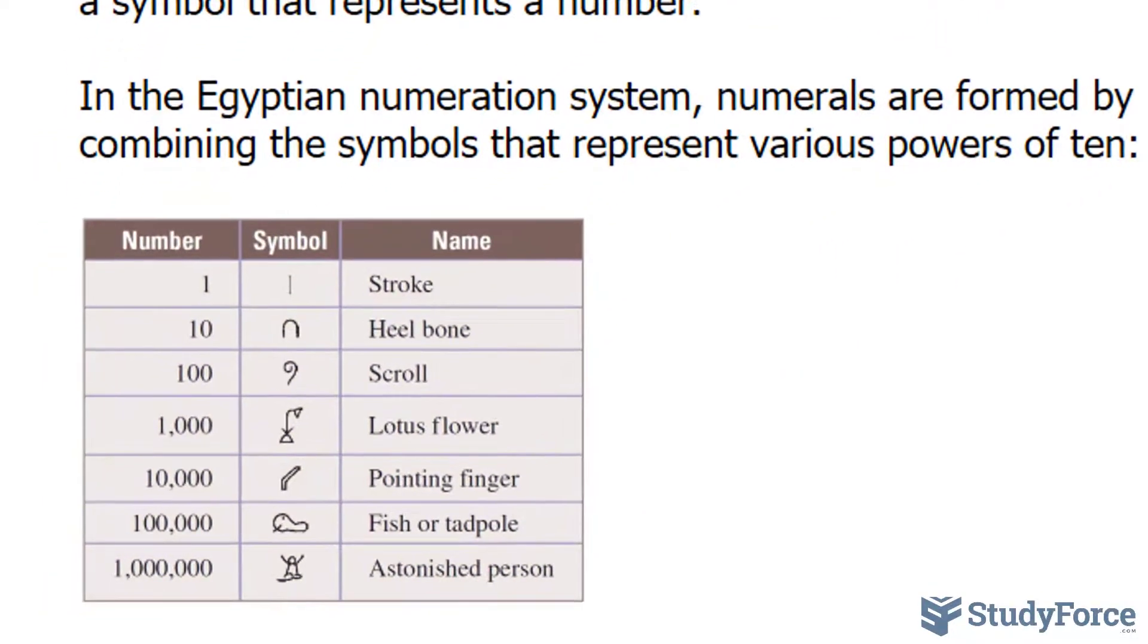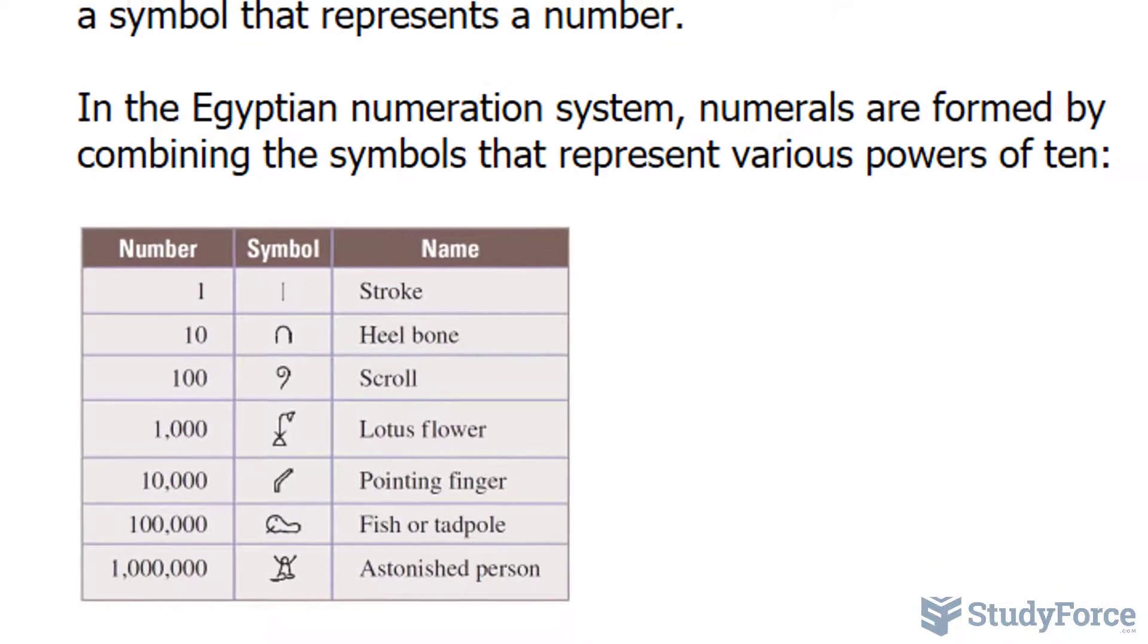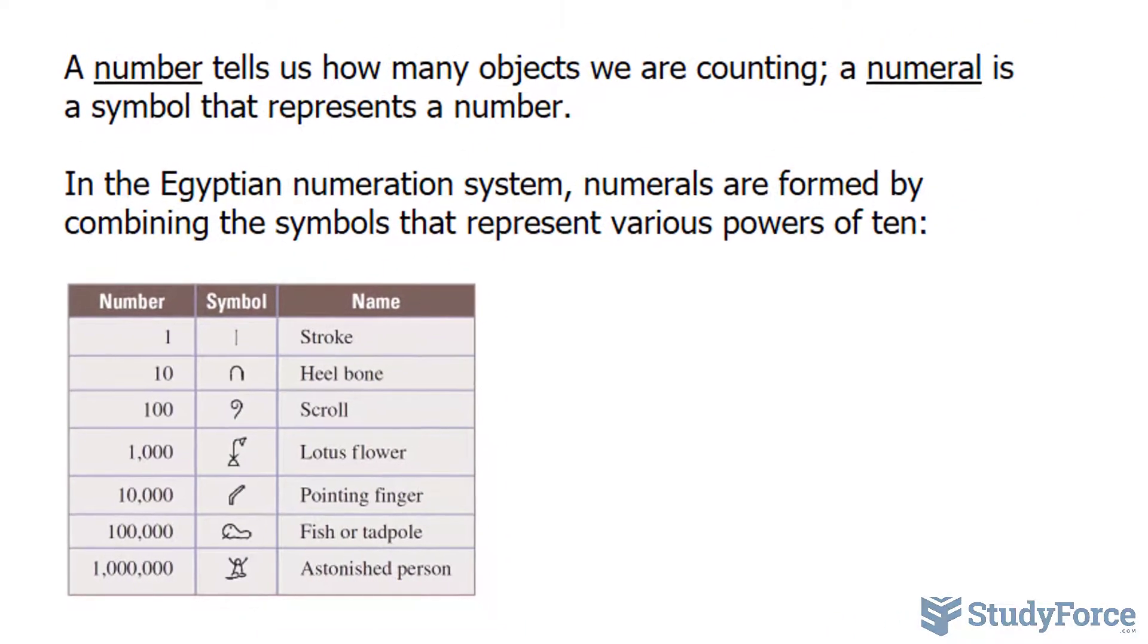Now before we continue, remember the difference between a number and a numeral. A number tells us how many objects we are counting, whereas a numeral is a symbol that represents a number.